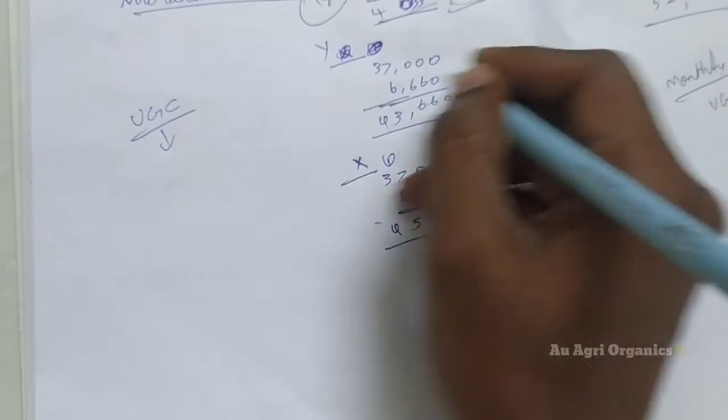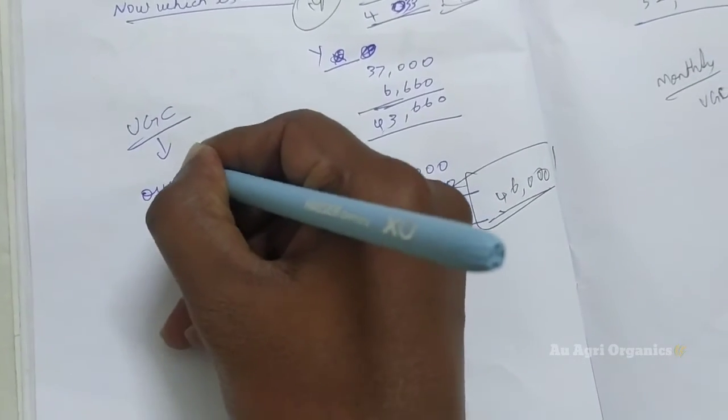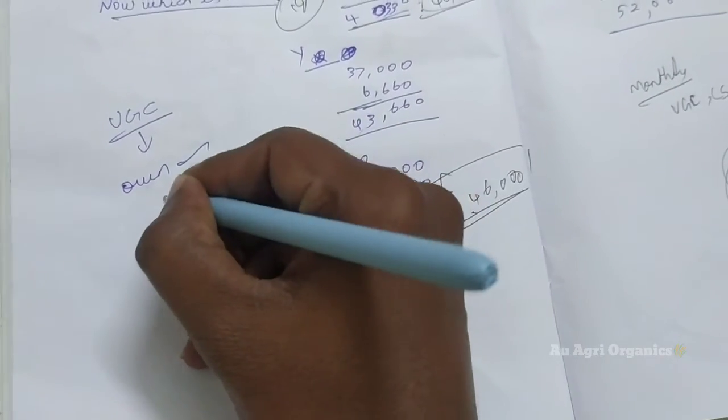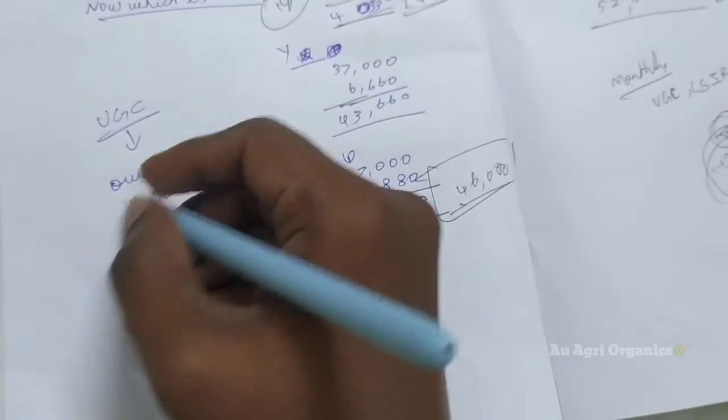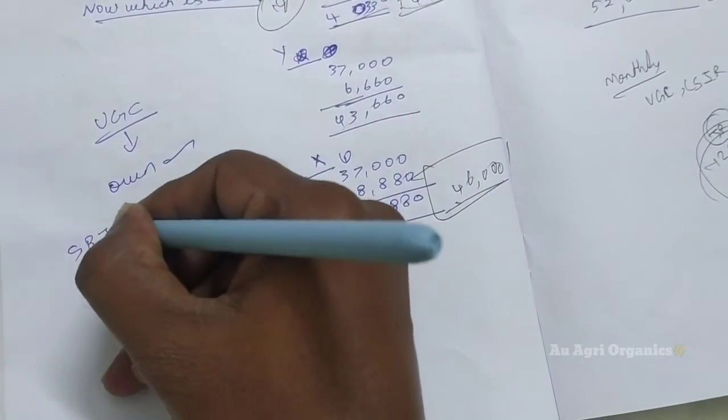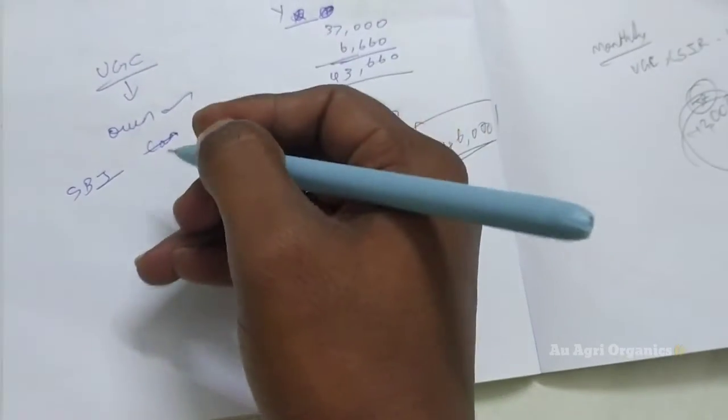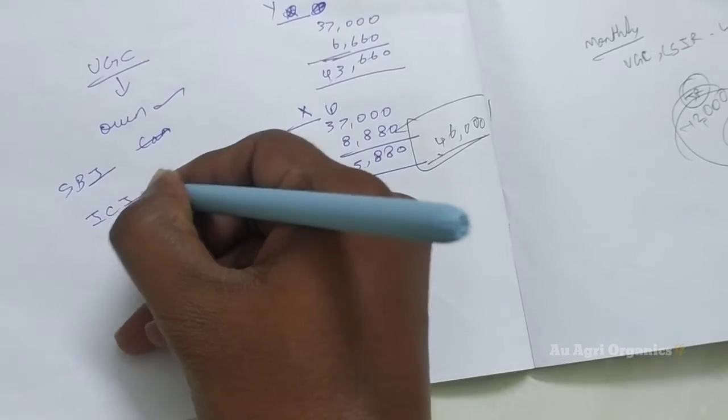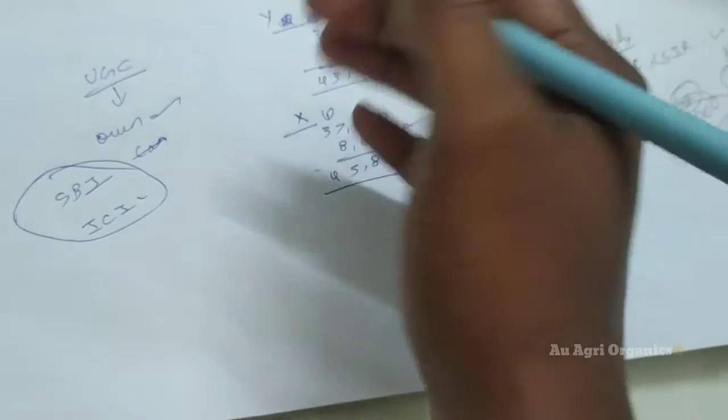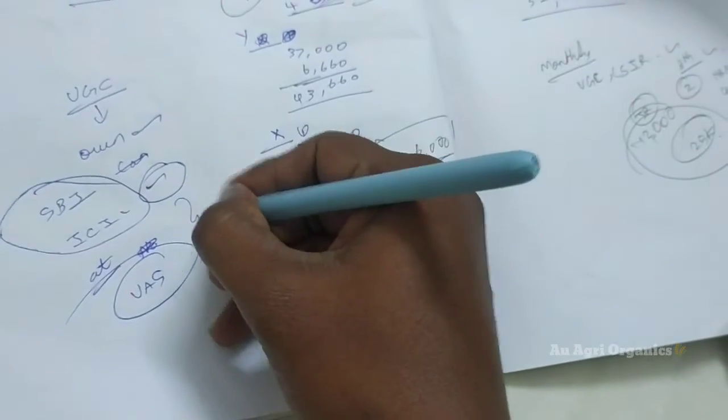And another one big advantage of this UGC fellowship is, you will get monthly fellowship to your own bank account. It will be dispersed by Canara Bank portal. But you can have bank account in any bank. For example, I am having account in SBI. But some other may have account in Punjab National Bank. Some other may have account in ICICI Bank. So whatever bank, wherever you may have this bank account. That is one of the big advantages of this UGC fellowship.